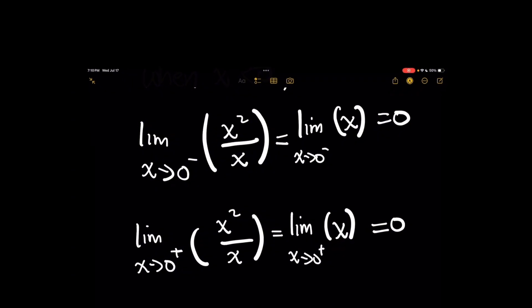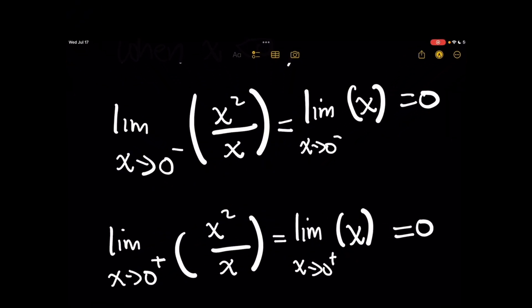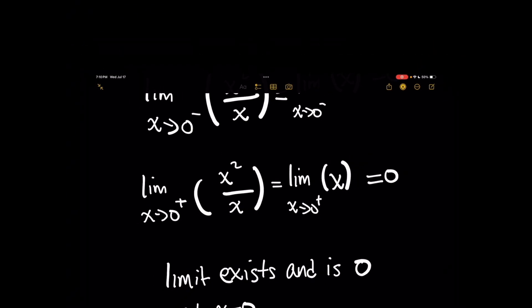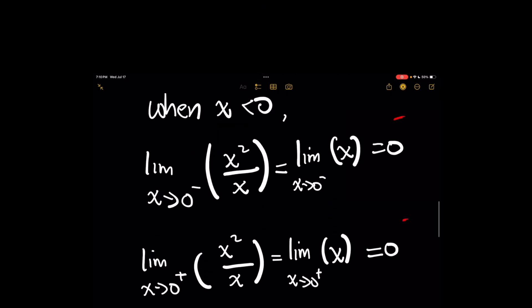you don't have to have the function defined there, because we're talking about approaching a point. But the main thing you want to watch out for is things like jump discontinuity, which we don't have here, because no matter how we approach the origin, we get the same value from a left side and the right side.